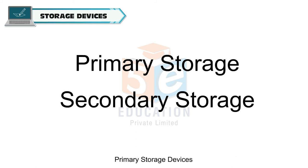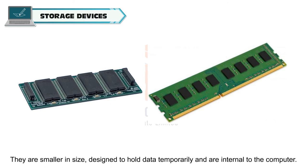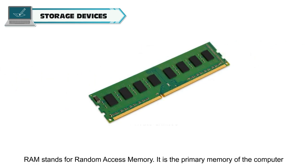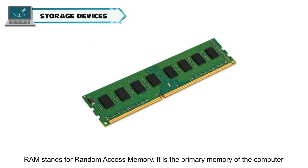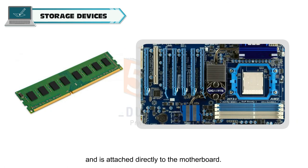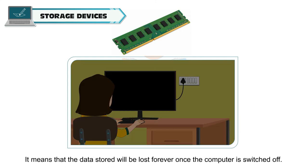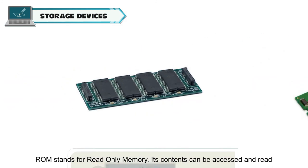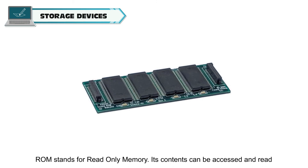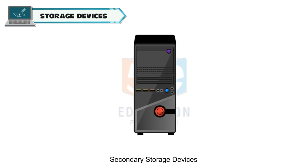Primary storage devices. They are smaller in size, designed to hold data temporarily and are internal to the computer. Examples are RAM and ROM. RAM stands for Random Access Memory. It is the primary memory of the computer and is attached directly to the motherboard. RAM is volatile, meaning that the data stored will be lost forever once the computer is switched off. ROM stands for Read-Only Memory. Its contents can be accessed and read but cannot be changed. It has a non-volatile memory.